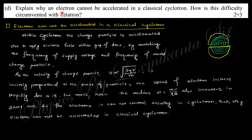Why can an electron not be accelerated in a classical cyclotron? In a cyclotron, particles follow a spiral path and are accelerated in the gap where frequency matches. For electrons, mass is very low, so velocity is very high, meaning radius becomes very large. Within a few cycles, velocity increases to the relativistic limit, creating problems. Therefore, electrons cannot be accelerated in a cyclotron.